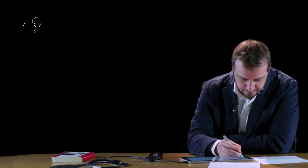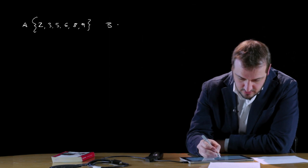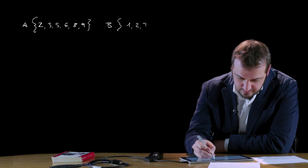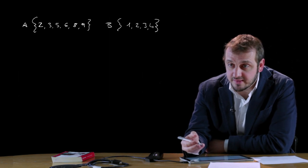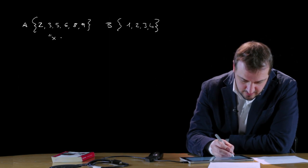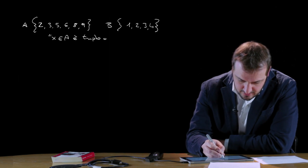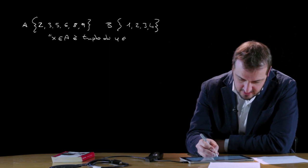Facciamo un esempio in modo tale da rivedere queste quattro modalità di rappresentazione delle relazioni binarie. Definiamo intanto due insiemi: l'insieme A caratterizzato dai numeri 2, 3, 5, 6, 8, 9 e l'insieme B dove prendiamo i numeri 1, 2, 3 e 4. Andiamo a definire la relazione, cioè quella particolare legge: x appartenga ad A ed è triplo di y che invece appartiene a B.